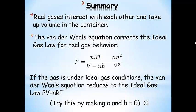To summarize: the big difference between real gases and ideal gases is that real gases interact with each other and they do actually take up volume, whereas in the ideal gas law, molecules don't interact and are assumed to take up no space. The Van der Waals equation corrects the ideal gas law for real gas behavior through constants A and B. If a gas is behaving ideally, the Van der Waals equation reduces to the ideal gas law PV = nRT — if you make A and B zero, you're right back at the ideal gas law.